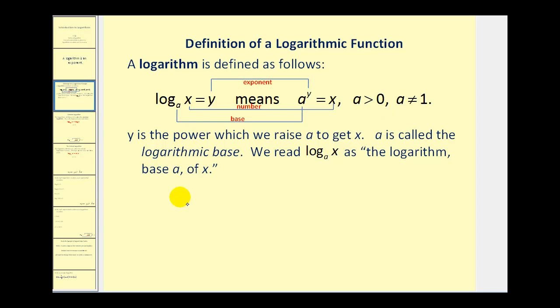So if we have log base two of eight equals three, this means two to the power of three equals eight. And a nice way to remember that is just start with the base and go around the circle. Two to the power of three is equal to eight.